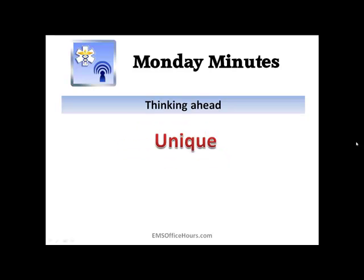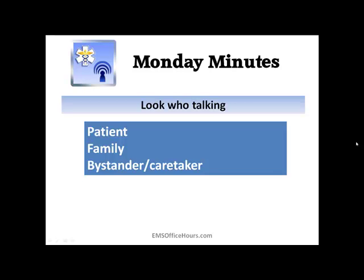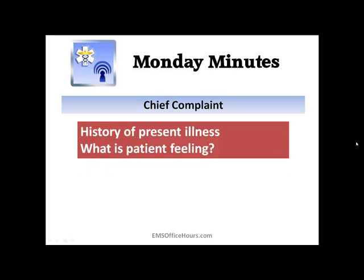When you're assessing patients where you might be suspicious of some sort of neurological event, you'll be asking unique questions and looking for unique signs and symptoms to get your assessment going and build a better clinical picture. Try to see who's talking — is it the patient, the family, a bystander, a caretaker, home health aide, or a visiting nurse? Are they reliable or unreliable when it comes to the history you're trying to obtain?